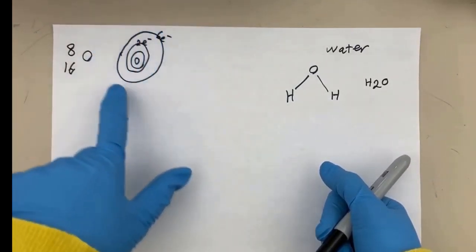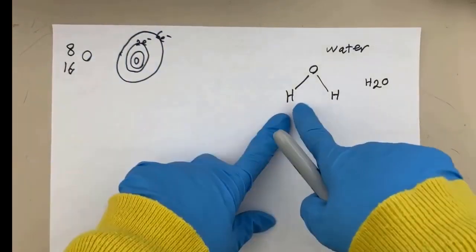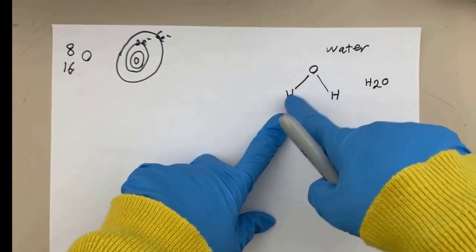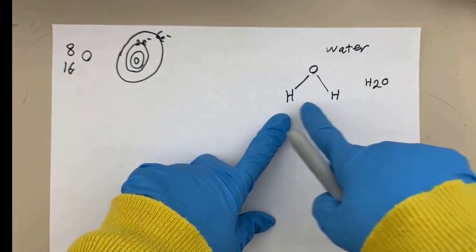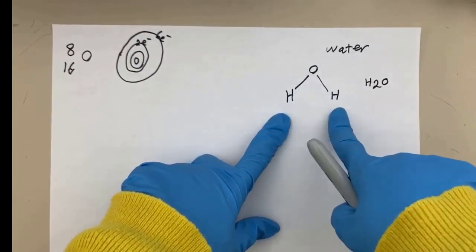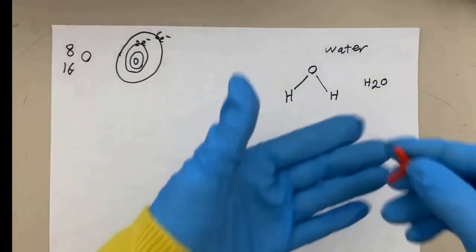Oxygen needs two more electrons to fill its outermost shell. That's why oxygen makes two bonds with hydrogen.